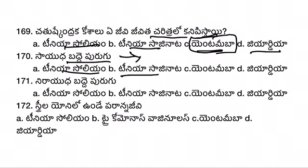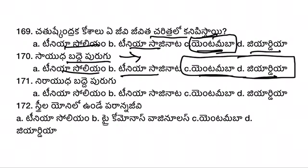The organisms discussed include Taenia solium, Taenia saginata, Entamoeba, and Giardia. Taenia solium and Taenia saginata are tapeworms. Taenia solium has a scolex with hooks and spines, while Taenia saginata has a scolex without hooks.